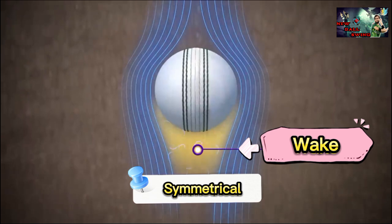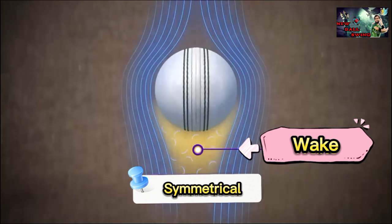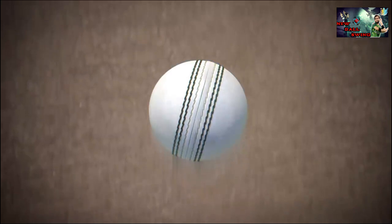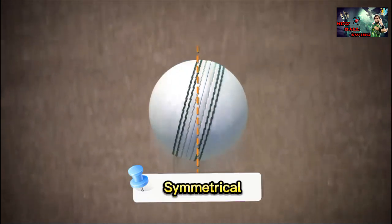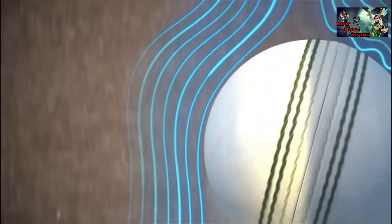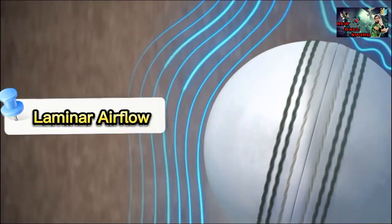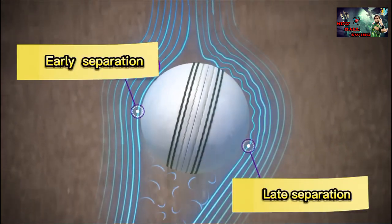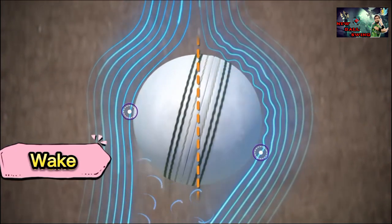At the same time, a region of airflow separation behind the ball — called the wake — is also symmetrical, resulting in a no-swing delivery. However, when a swing bowler bowls with a new ball and releases it with the seam angled, this generates asymmetrical airflow: on the non-seam side there is smooth laminar airflow, while on the seam side, the seam trips the airflow into chaotic, high-energy turbulent airflow, which keeps the flow attached to the surface, leading to late separation.